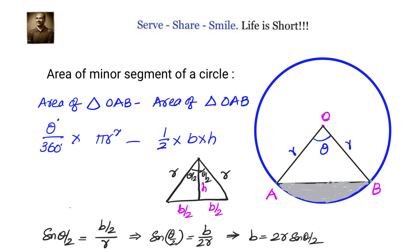Now let us find out h. For that we use cos(θ/2). Cos(θ/2) is adjacent divided by hypotenuse, so cos(θ/2) = h/r, which gives h = r·cos(θ/2).